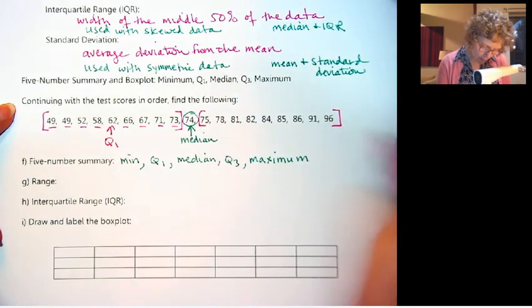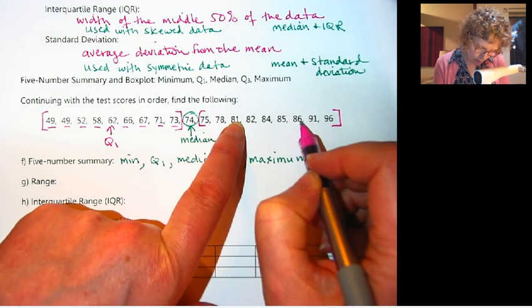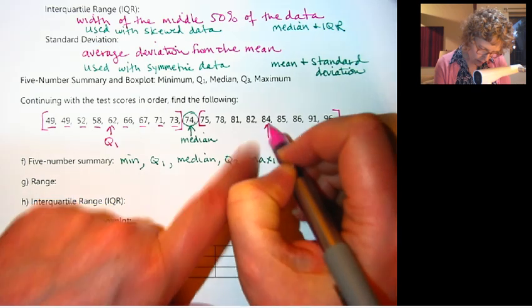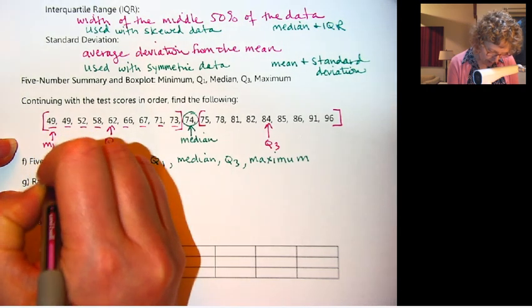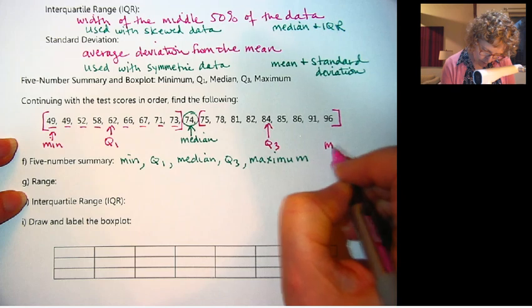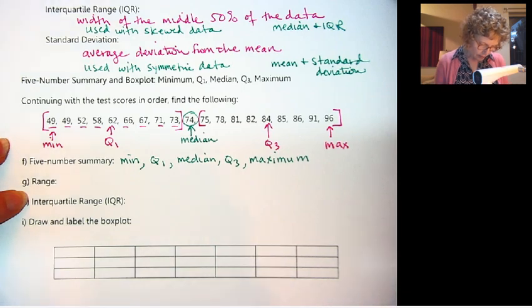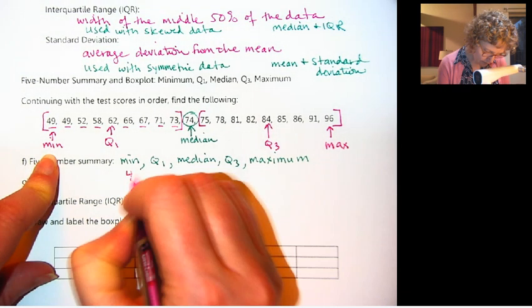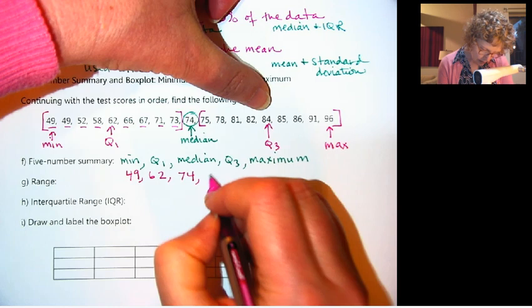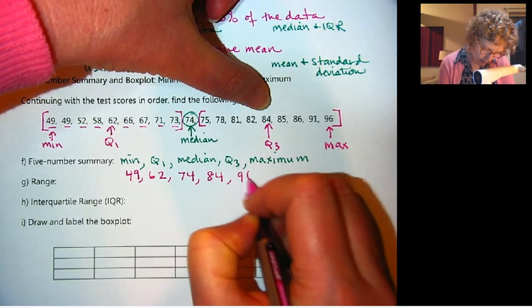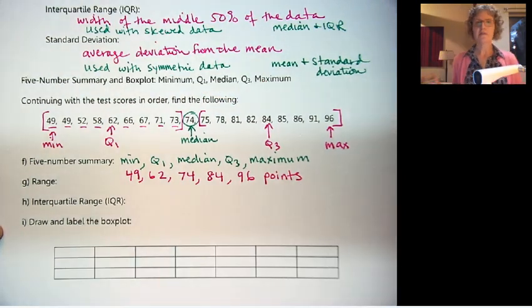We're going to find our upper quartile or third quartile here. This should also be an odd number. Yes, so 84 is our Q3. And then we can also write down our minimum, the smallest value, and our maximum, the largest value. So there is our five-number summary right there. We could list it out as 49, 62, 74, 84, 96 points. That is our five-number summary.